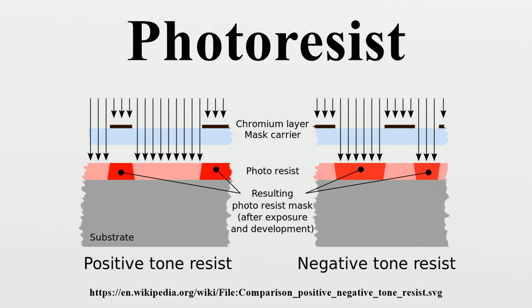Negative Photoresist: Contrary to past types, current negative photoresists tend to exhibit better adhesion to various substrates such as glass and metals, compared to positive tone photoresists. Additionally, the current generation of G, H, and I line negative tone photoresists exhibit higher temperature resistance over positive resists. One very common negative photoresist is based on an epoxy-based polymer.